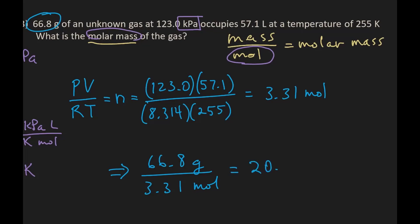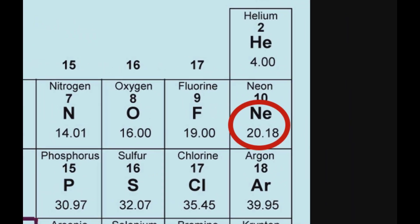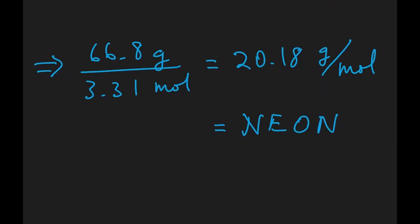And so what we're going to do next is simply divide the amount of mass by the amount of moles that we found, 3.31 moles, and that gives us grams over moles, which is the molar mass. In this case, 20.18 grams per mole, which just happens to be, if you look on the periodic table, neon.